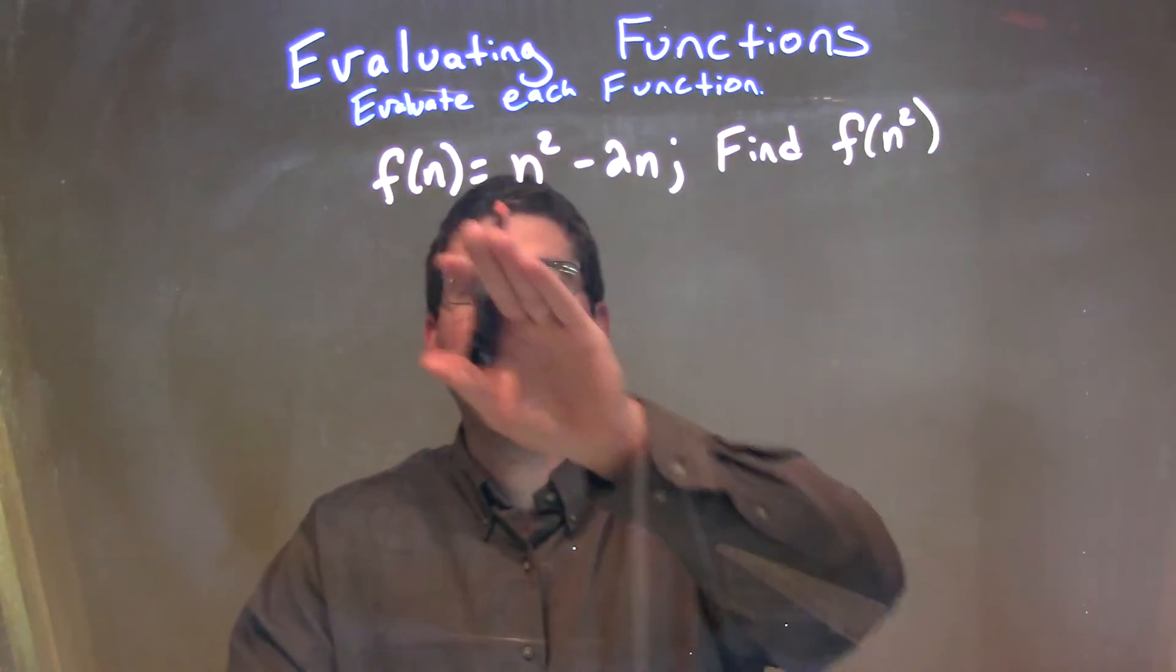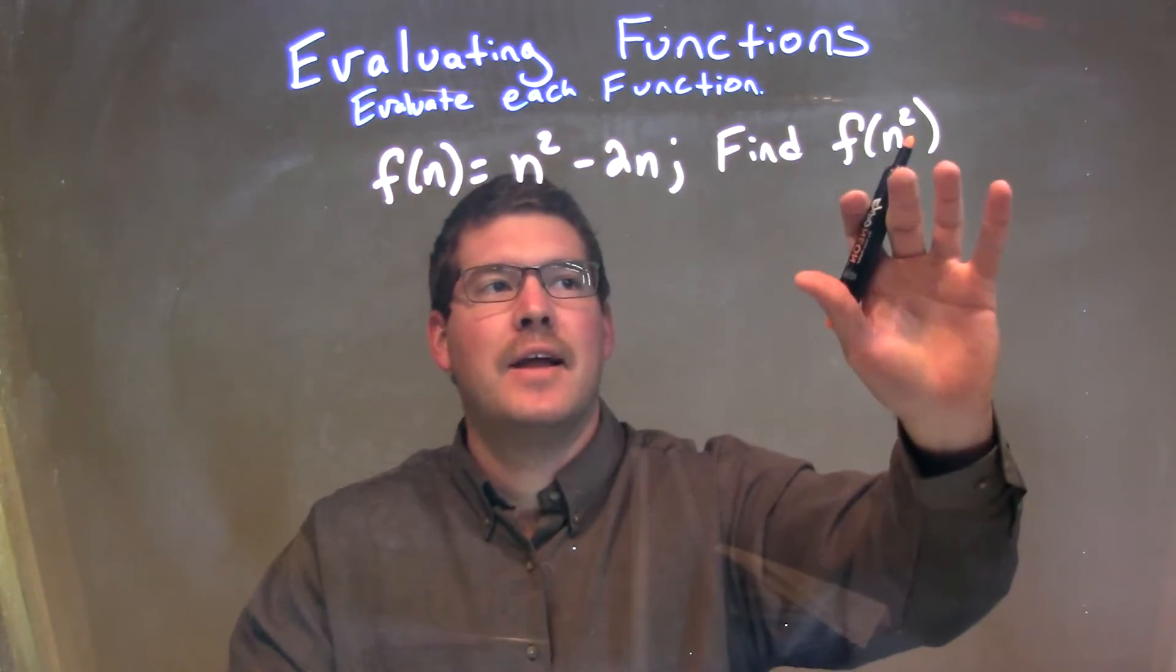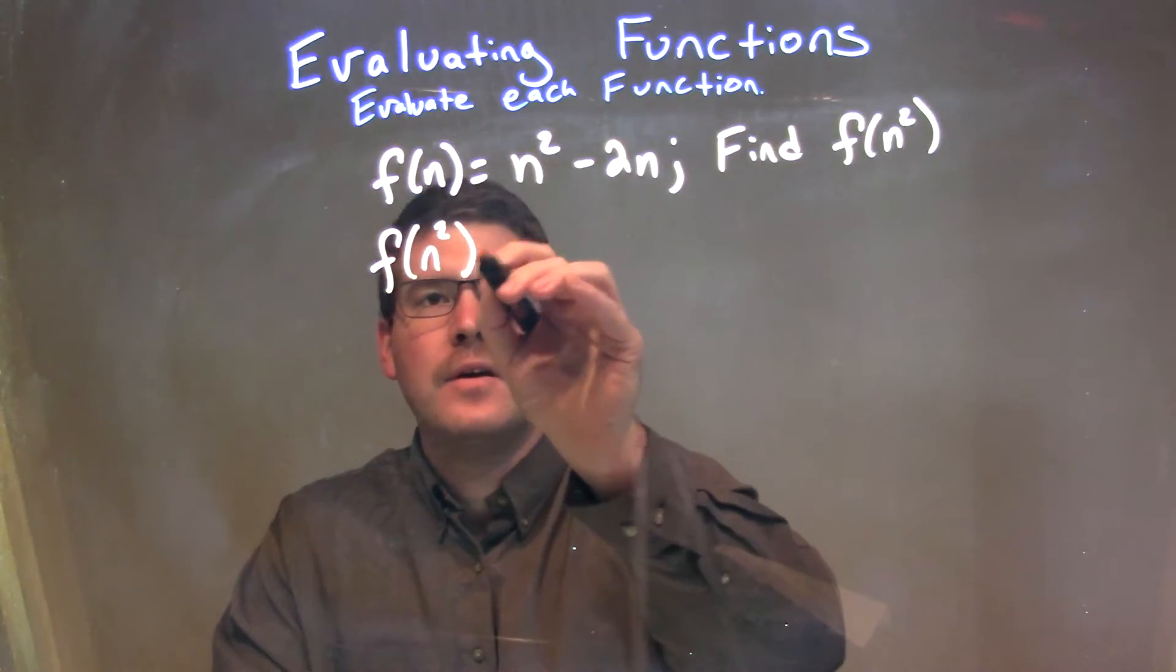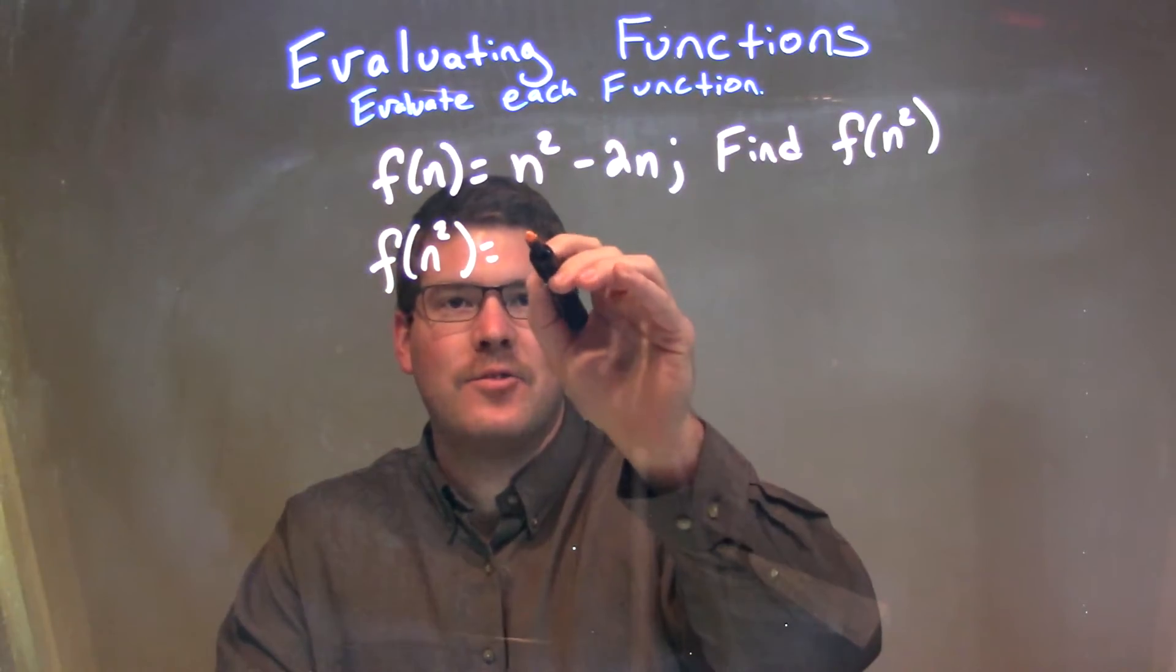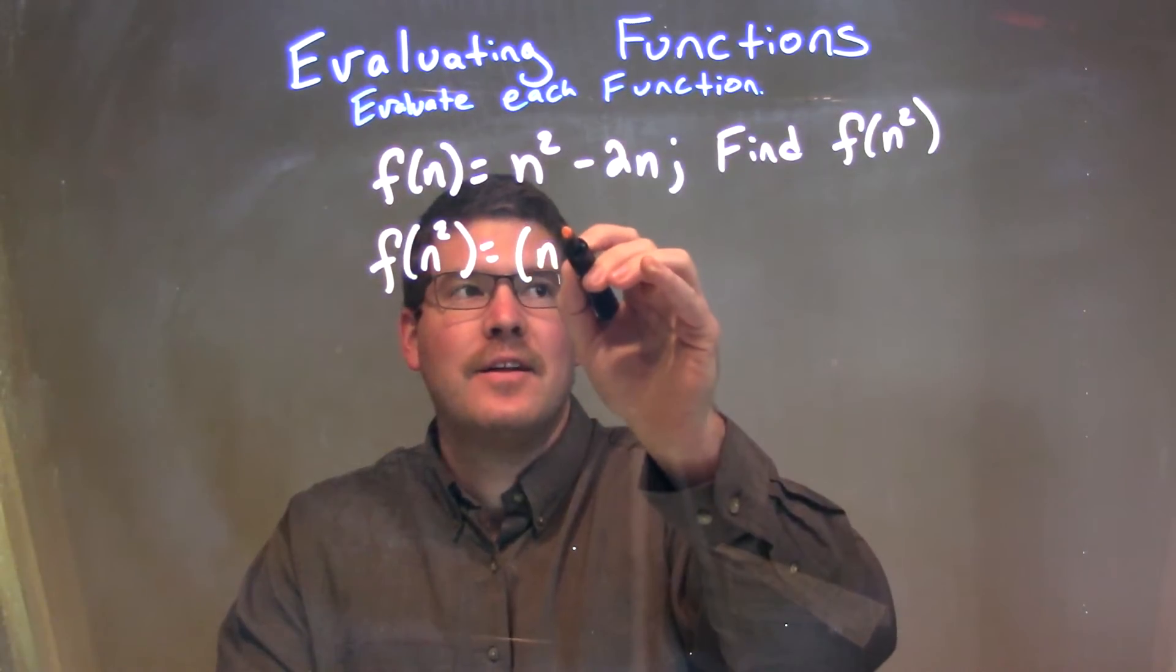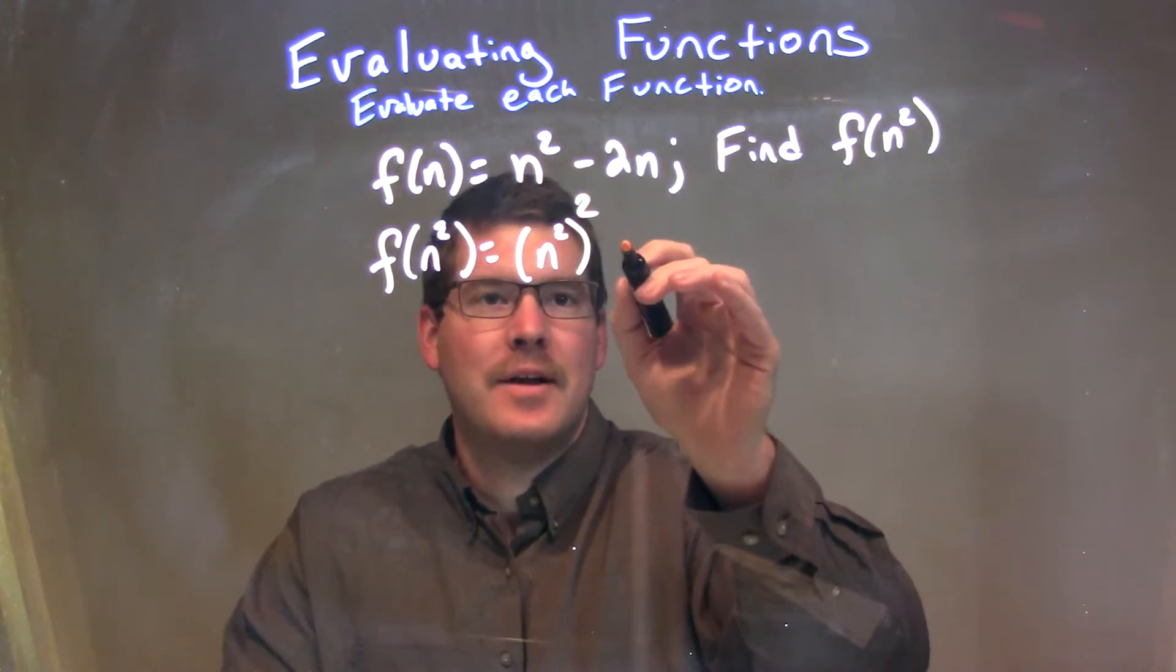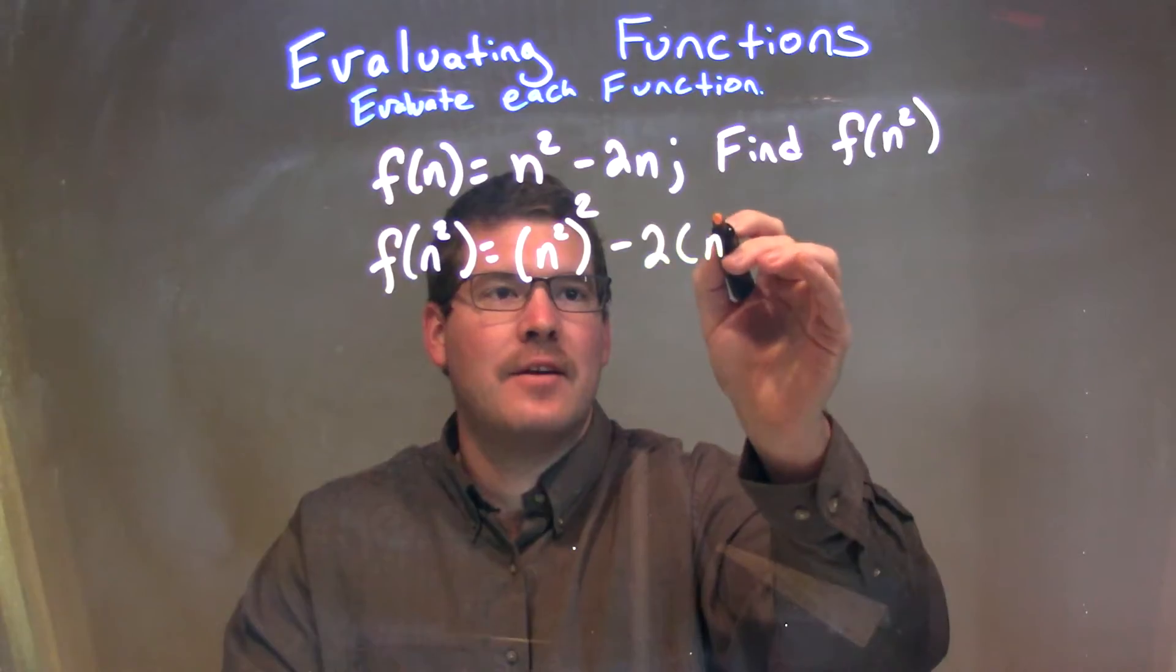What that means is every single time we see an n, we need to plug in an n squared. So f of n squared is equal to n squared—we're plugging in for n—all to the second power, minus 2 times n squared.